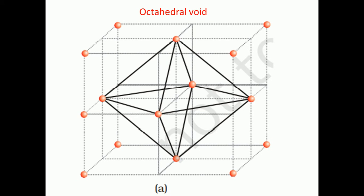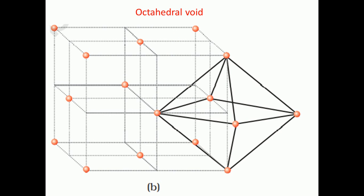For an FCC unit cell with n number of atoms, the number of tetrahedral voids will be 2n. The octahedral void is formed by joining face-centered atoms along with edge-centered atoms. If we consider one unit cell and draw lines joining the face-centered atoms with corner atoms, we find octahedral voids at the edge centers. In an adjacent unit cell, the face-centered atom on one unit cell is shared with the neighboring unit cell.